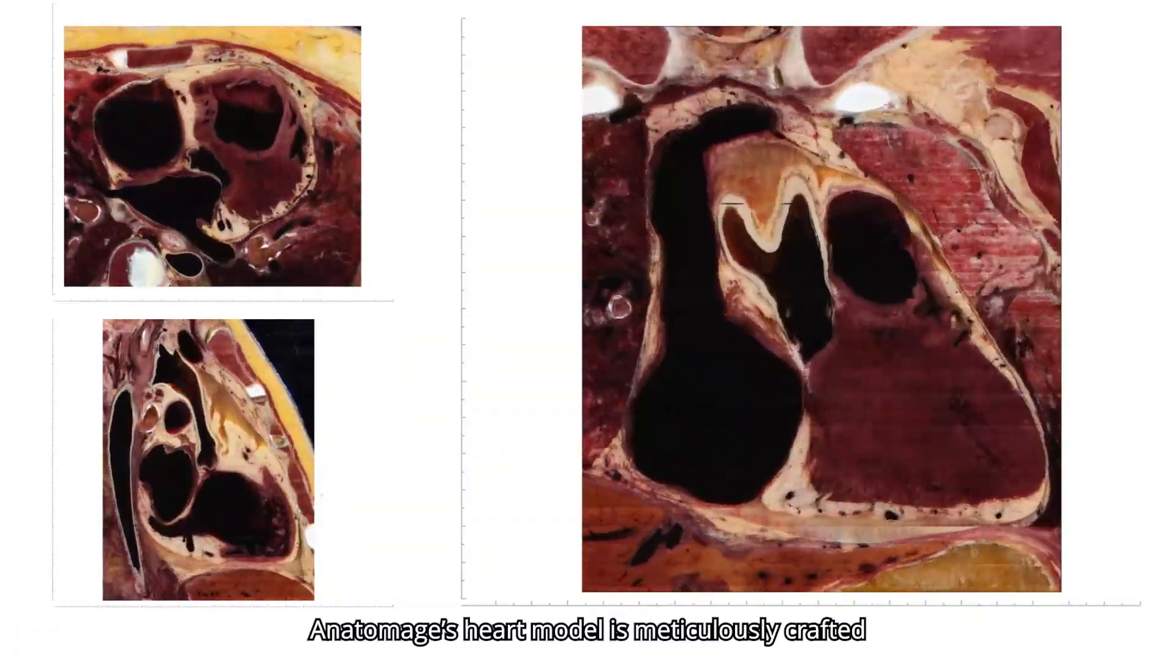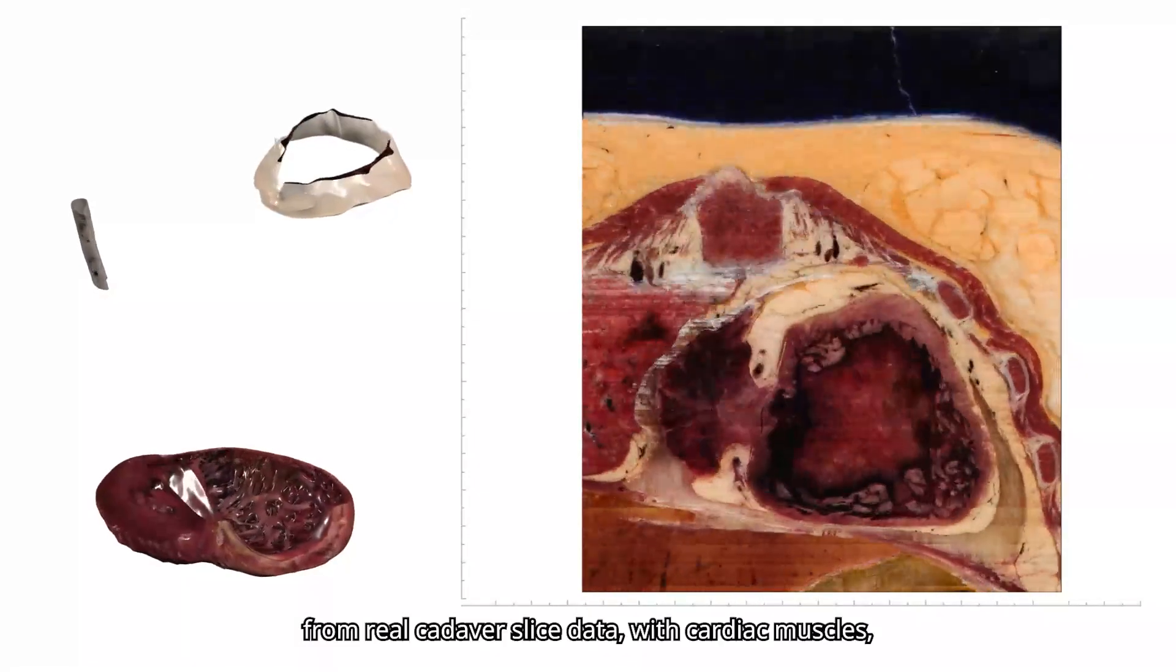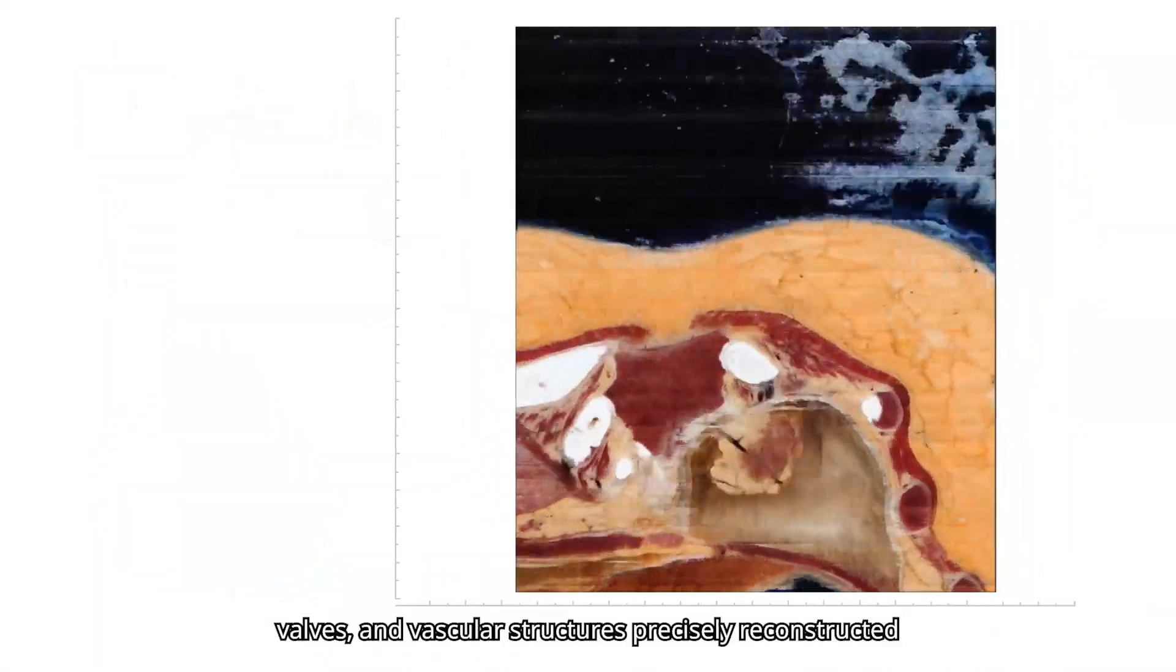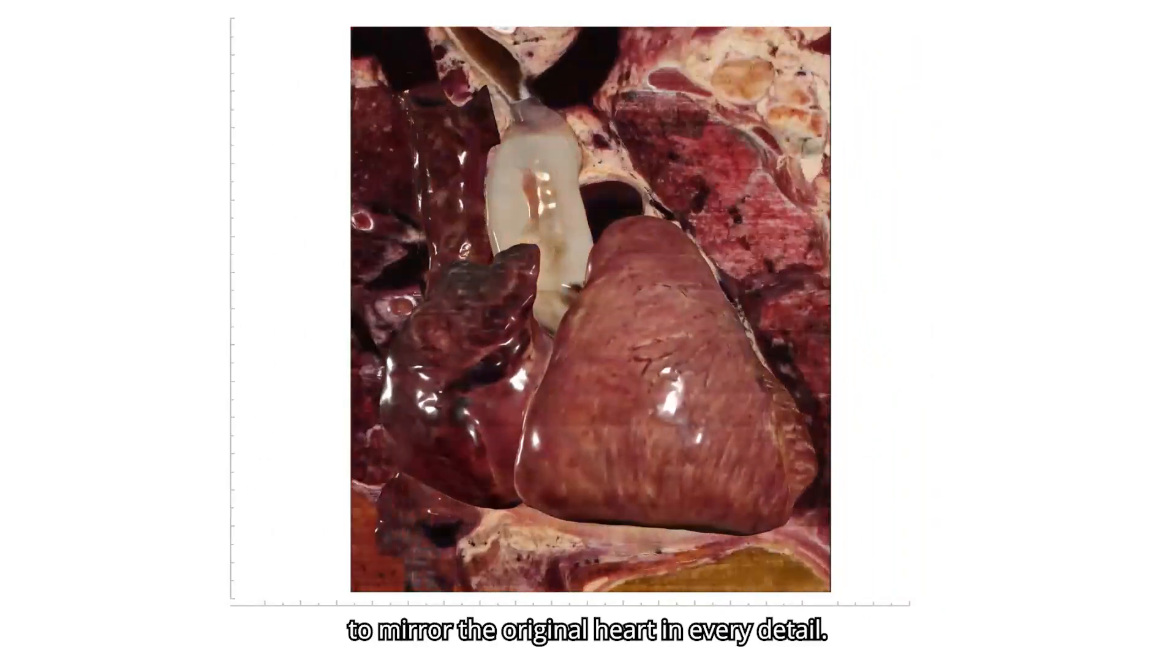Anatomage's heart model is meticulously crafted from real cadaver slice data, with cardiac muscles, valves, and vascular structures precisely reconstructed to mirror the original heart in every detail.